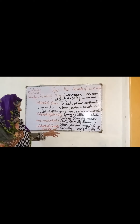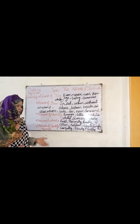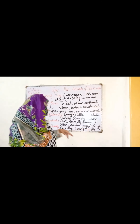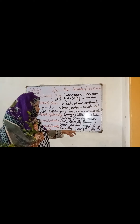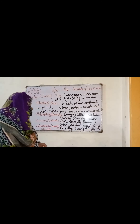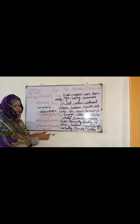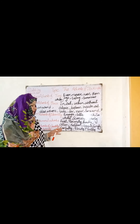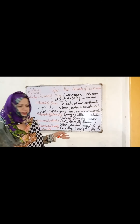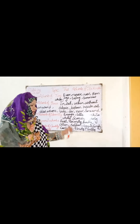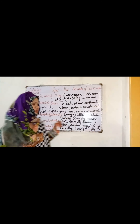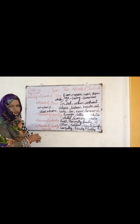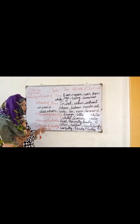Adverb of quality or manner tells us how the action takes place. Words like carefully, slowly, fast, seldom, again. For example: they are working slowly, they are writing carefully, they are running fast. These are examples of adverb of quality or manner — it means how the action takes place.